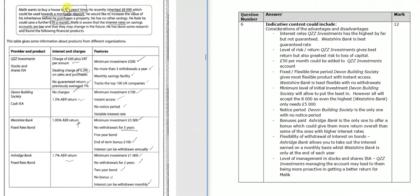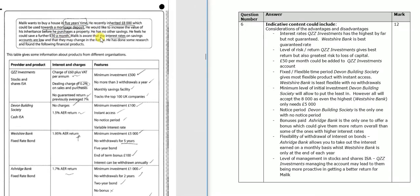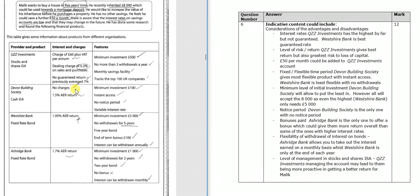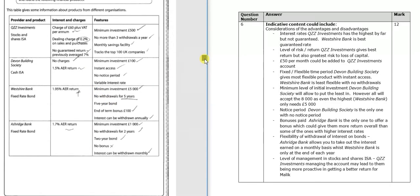We've got Malik who wants to buy a house in five years time. He's got some money which he's inherited, plus it looks like he wants to save 50 pounds a month. Just skim across this information — we can see we've got these different products that are available, the interests and charges together with the features outlined.